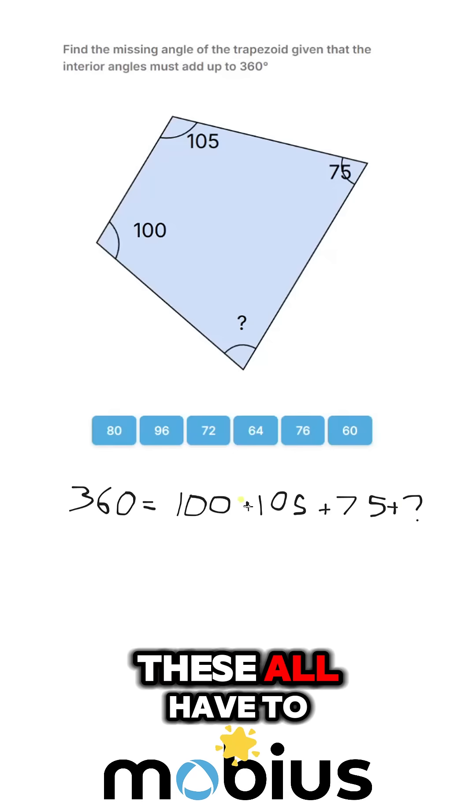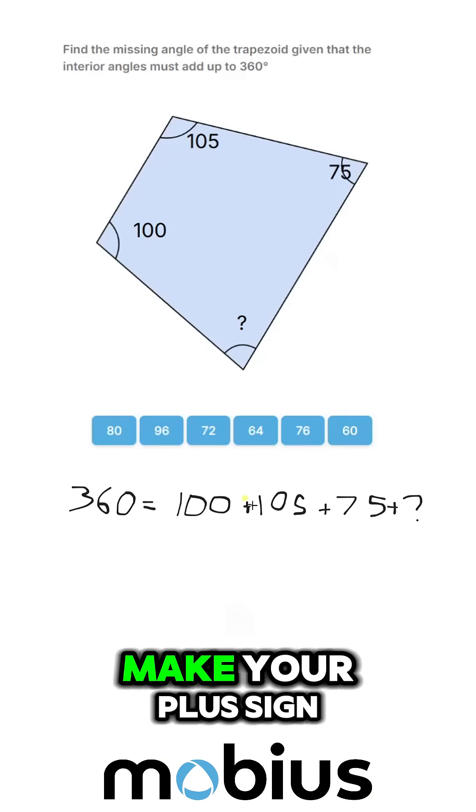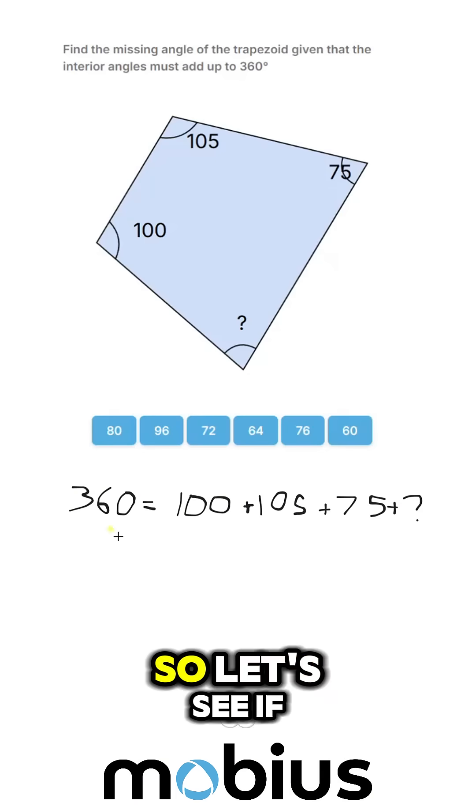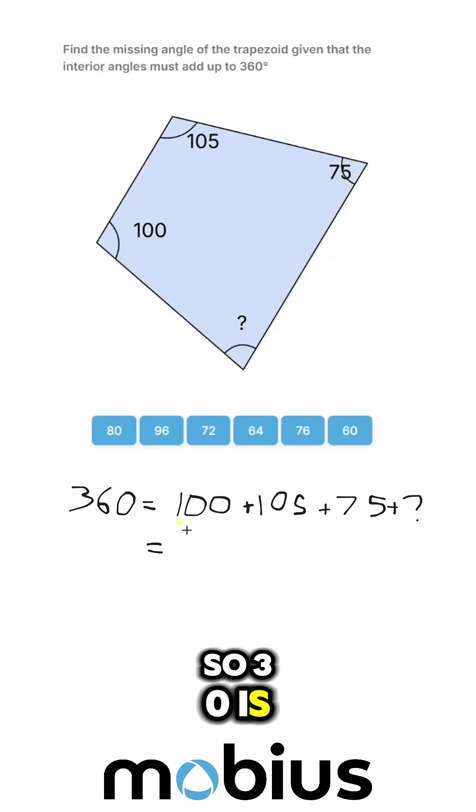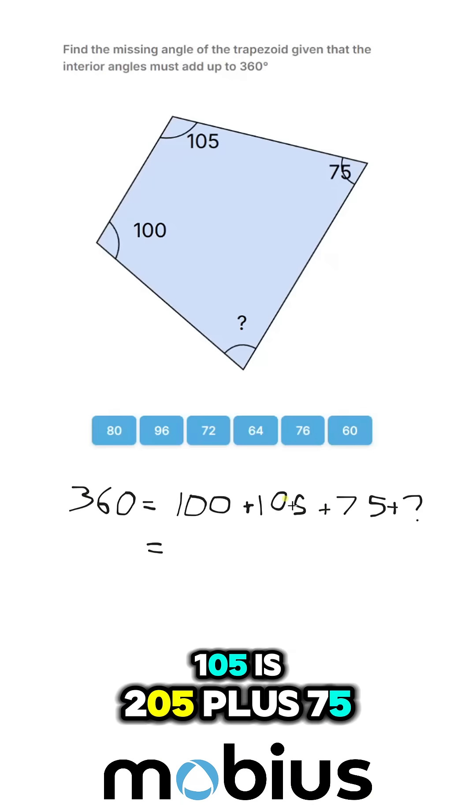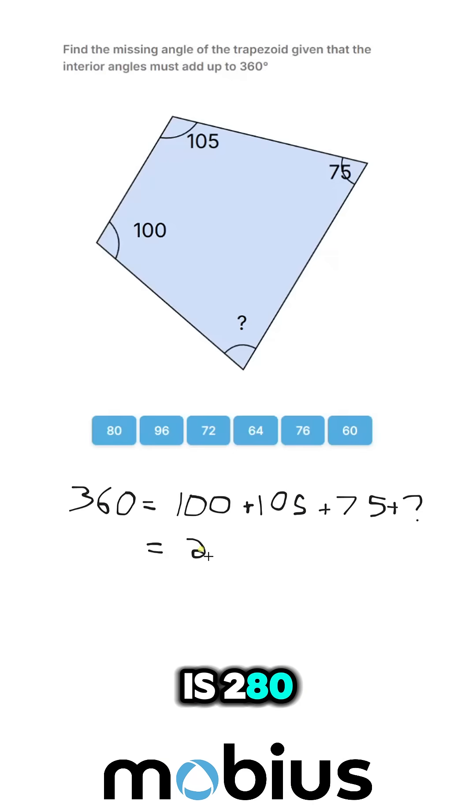So, we know that these all have to add up to 360. Let's see if we can add these together a little bit. So, 360 is equal to 100 plus 105 is 205 plus 75 is 280.